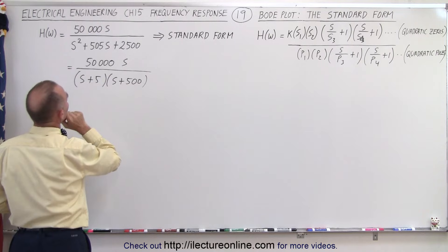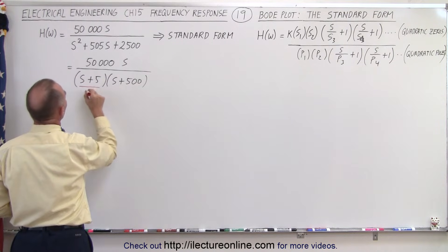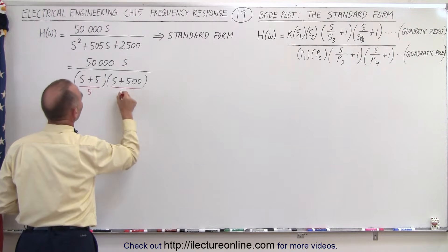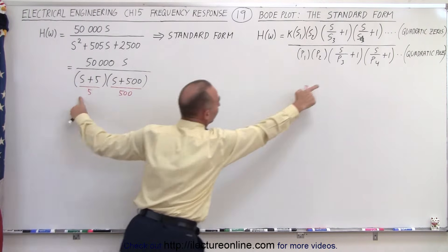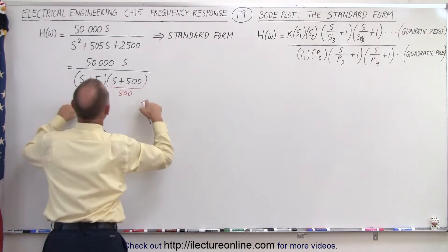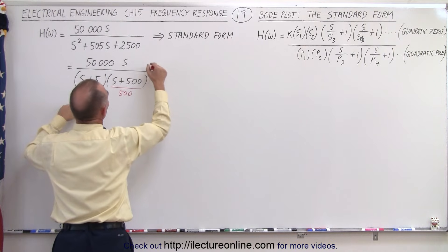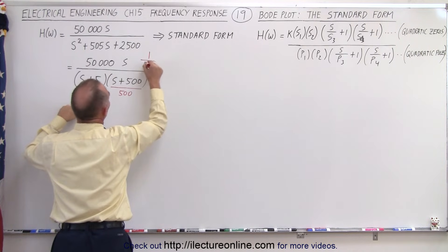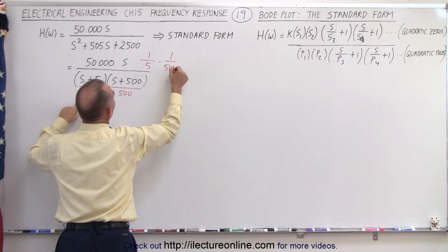So what we're going to do here is we're going to divide this by 5 and we're going to divide this by 500 so we can turn this into the standard form of a simple pole. And of course that means that we also have to multiply this by 1 over 5 times 1 over 500.